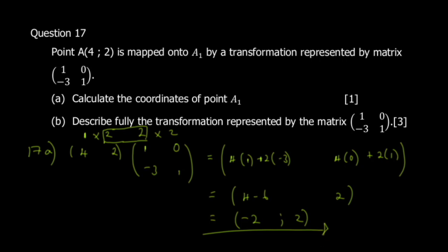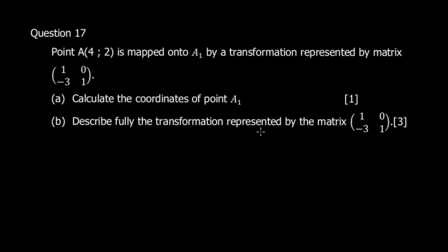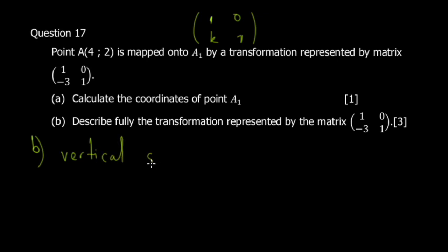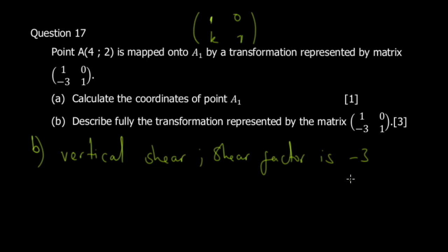The second part says describe fully the transformation represented by the matrix. The general formula for this type of matrix is a shear. This is a vertical shear. You describe it and state the shear factor.